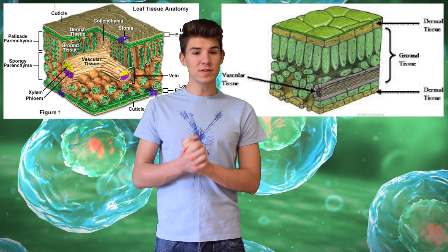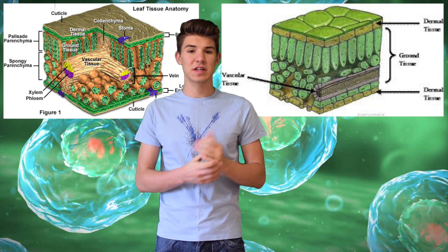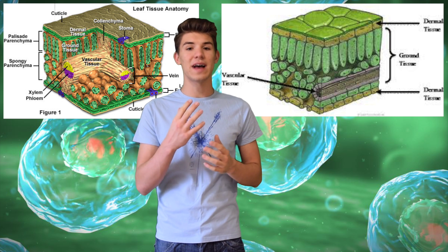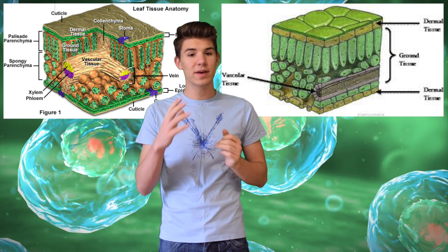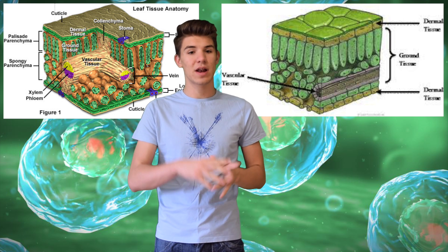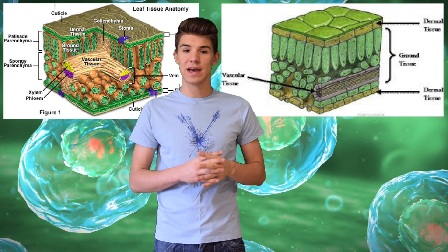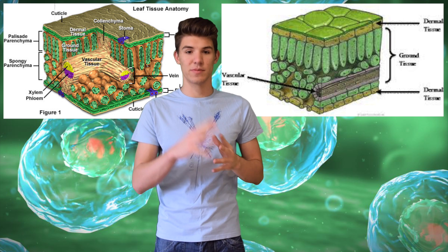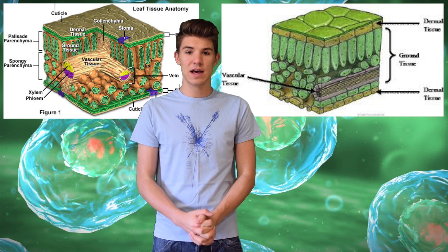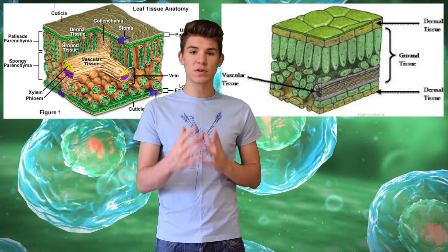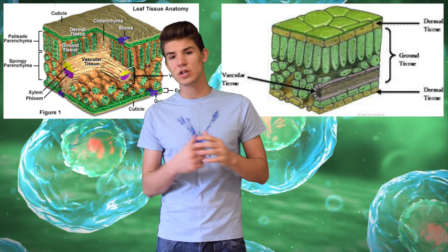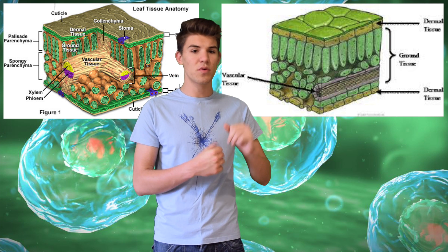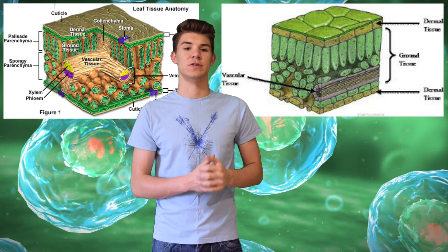The ground tissue is a little more complicated because it actually consists of three types of tissues: the parenchyma tissue, the collenchyma tissue, and the sclerenchyma tissue. They function in photosynthesis, storage, regeneration, support, and protection.